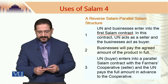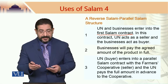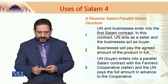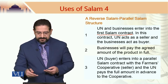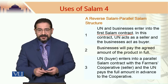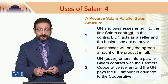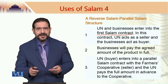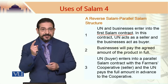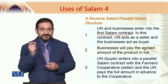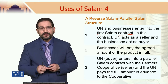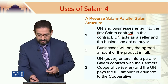Businesses will pay the agreed price in full at the time of the first salam contract, and of course this acts as financing. UN then enters into a parallel salam contract with the farmers' cooperatives, and the UN pays the full amount in advance to the cooperative. So UNDP, in Kenya or somewhere else, is buying coffee beans from the farmers and paying in advance. The money started from the businesses — Costa, Starbucks, etc. — came to UNDP, and UNDP is then paying it to the farmers through a farmers' cooperative.